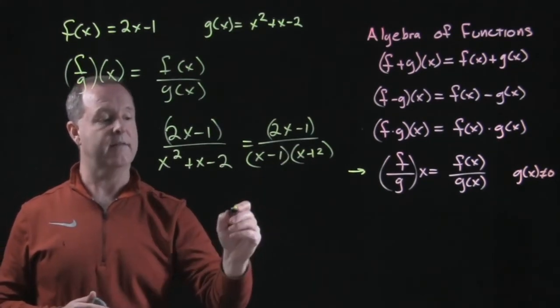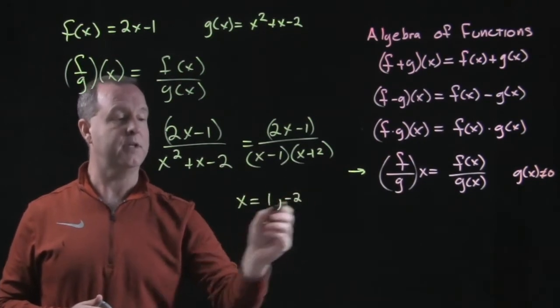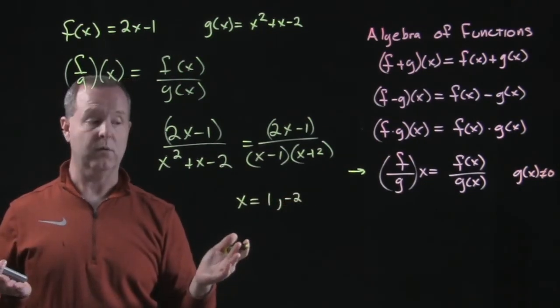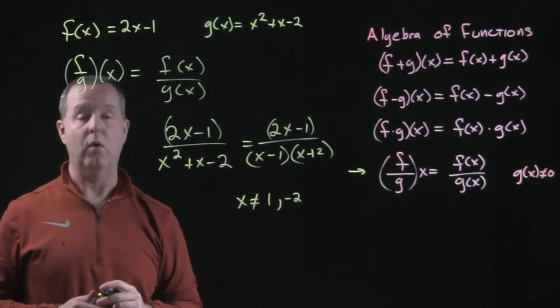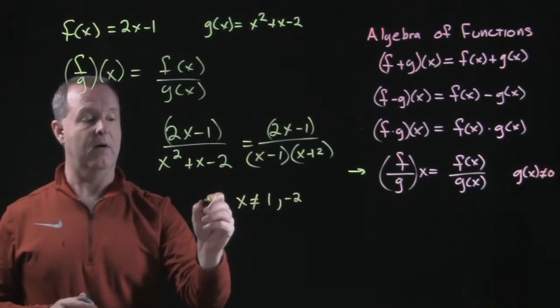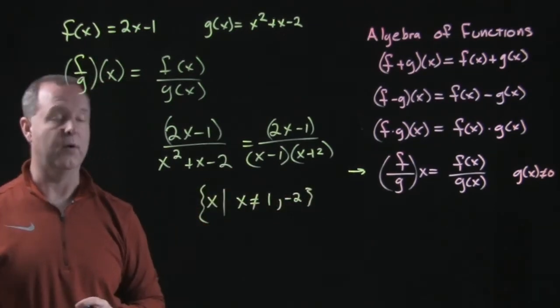And then in factored form, I can see if x equals 1 or if x equals negative 2, my denominator is equal to zero. So I want to make sure that my domain cannot include 1 or negative 2. So it could be all x such that x does not equal 1 or negative 2.